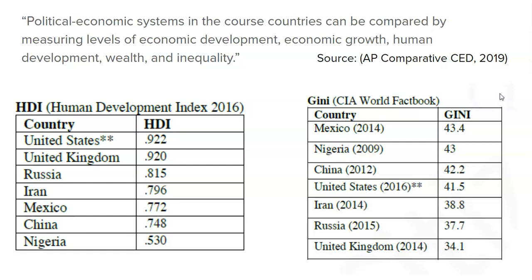The Gini coefficient measures equality or inequality. If you have a score of zero, you have perfect equality — all citizens are equal. The lower your number, the more equality there is; the higher your number, the more inequality and the bigger the gap between wealthy and poor. China's score is maybe surprisingly not very equal — which raises the question: how communist really are they?